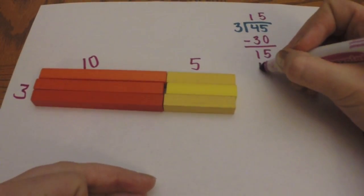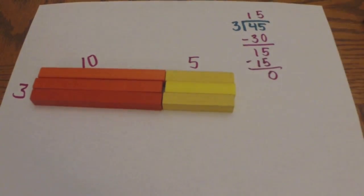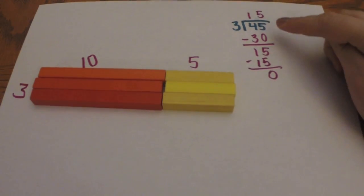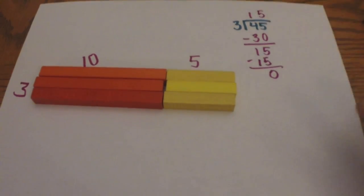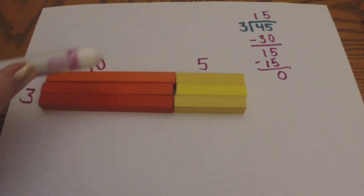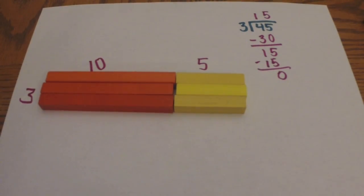And three times five is fifteen. And we subtract, and there's nothing left over. So the answer of forty-five divided by three is fifteen. And right here we have three tens or thirty, five tens or fifteen. If you add them together you get forty-five.